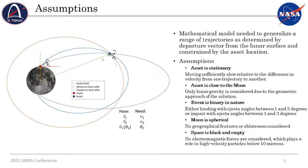The second assumption is that the asset is close to the moon. Previous work showed that when you're at a location like the Gateway's near-rectilinear halo orbit, the dust concentration is very low regardless of the event — most of it is carried away by solar wind. Third, events are binary in nature, meaning it's either an impact or a landing, and these physics are a little bit different. In both cases, the constraints of the dust is between 1 and 3 degrees from the horizontal. We're also assuming the moon is spherical, so we're not considering topographical features like hills or craters. And finally, space is black, empty, and boring — meaning there's no solar radiation pressure, no other bodies; it's just the moon and the dynamics in its immediate vicinity.